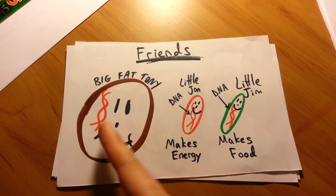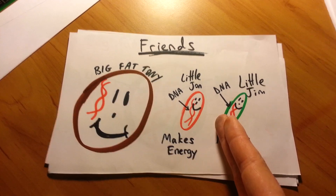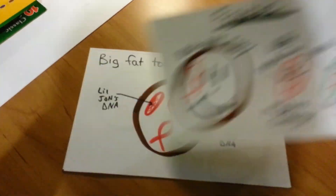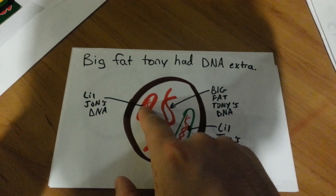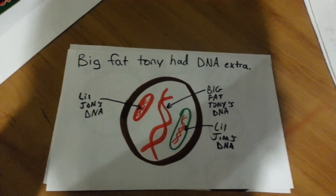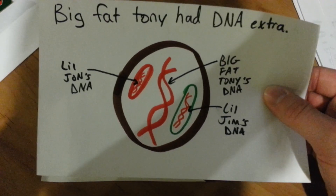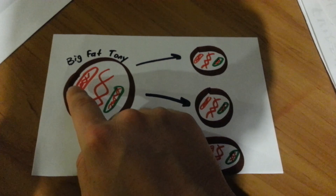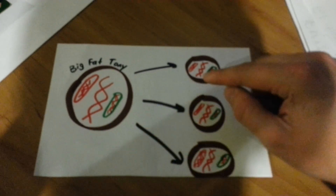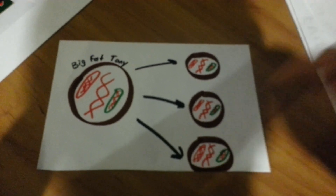So Big Fat Tony had his DNA, Little John had his DNA, and Little Jim had his own DNA. So wouldn't it make sense that if Big Fat Tony absorbed these two guys, you would find some leftover DNA inside of Big Fat Tony? In fact, Big Fat Tony had Little Jim and Little John living inside of him, and these guys had their own DNA left over from when Big Fat Tony absorbed them. So every time that Big Fat Tony reproduced, he actually reproduced his own Little John and his own Little Jim — a little bit of DNA left over from Little John and Little Jim was inside of these organelles, or these little organs that did things for Big Fat Tony.